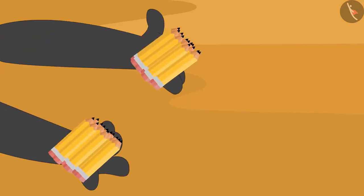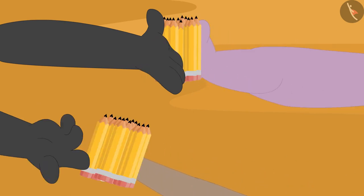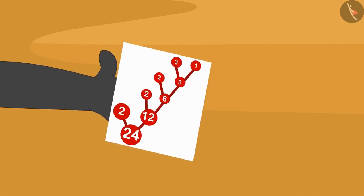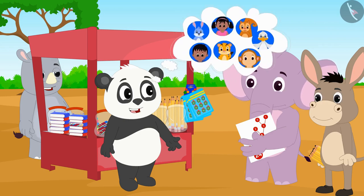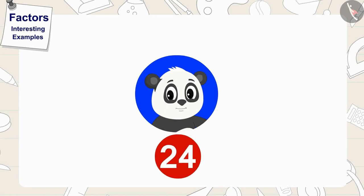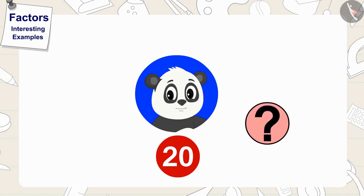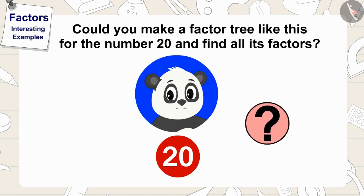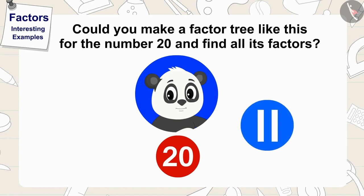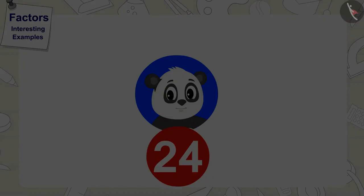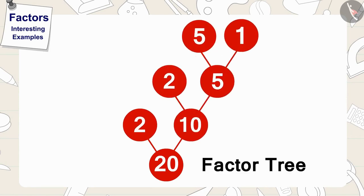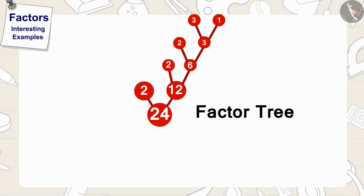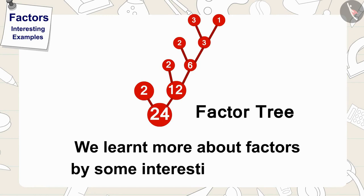Golu divided his 24 pencils equally among his 2 friends and gave them a picture of the factor tree so they could distribute the pencils equally to their friends. Children, if Golu had 20 pencils instead of 24, could you make a factor tree for the number 20 and find all its factors? You can stop the video and find the answer. Well done children! You have made this factor tree correctly. In this video we learnt more about factors through some interesting examples.